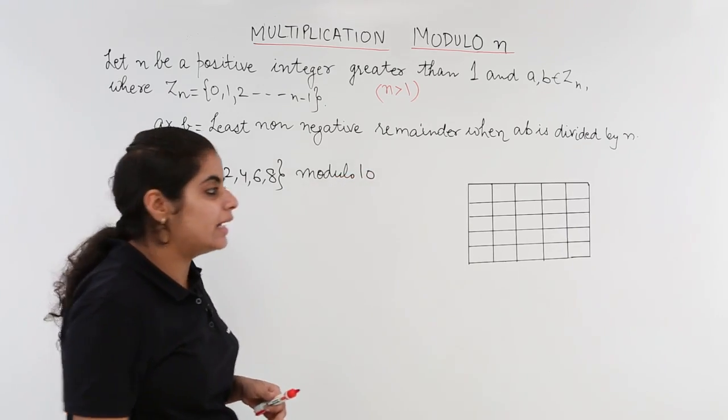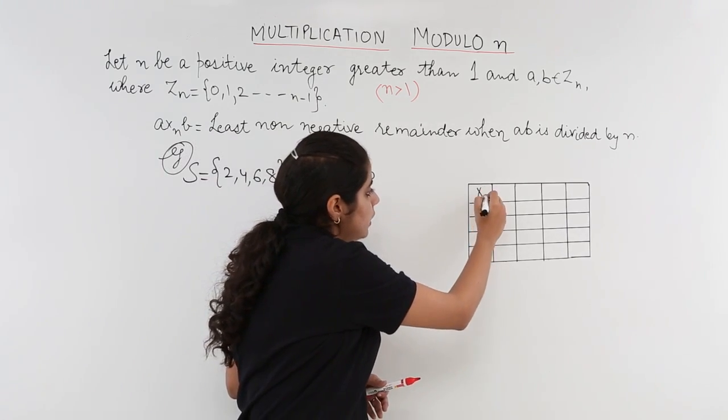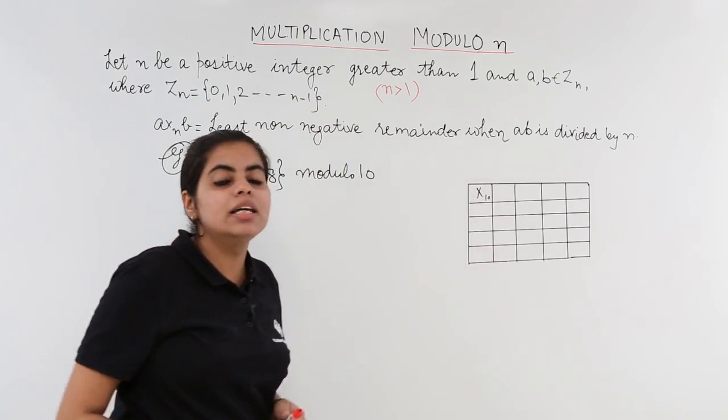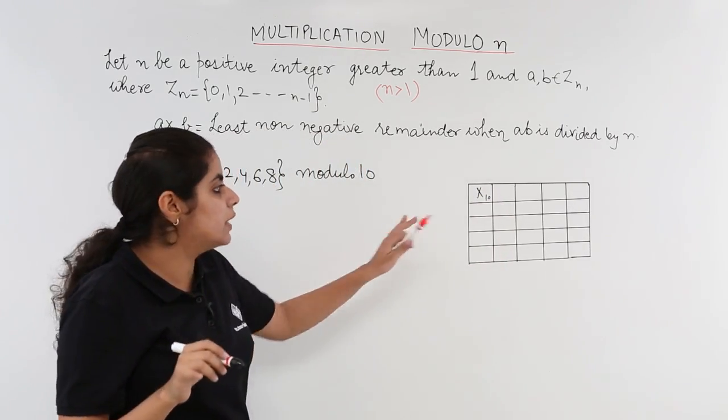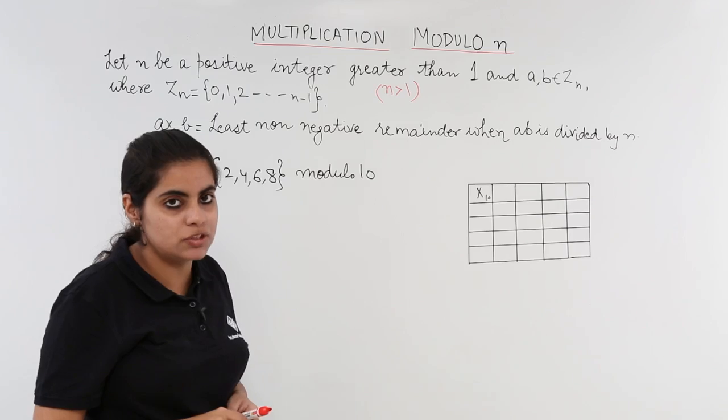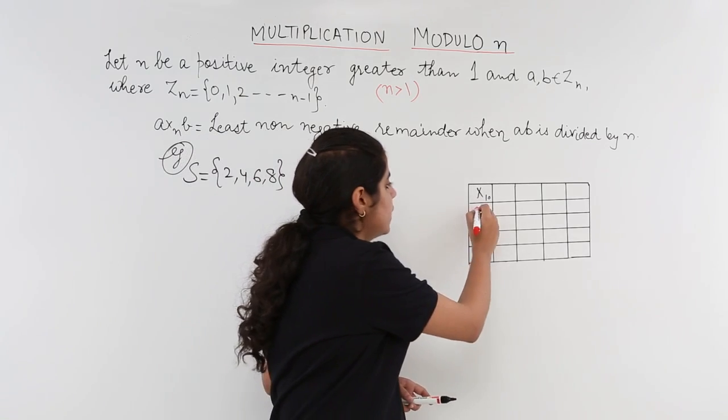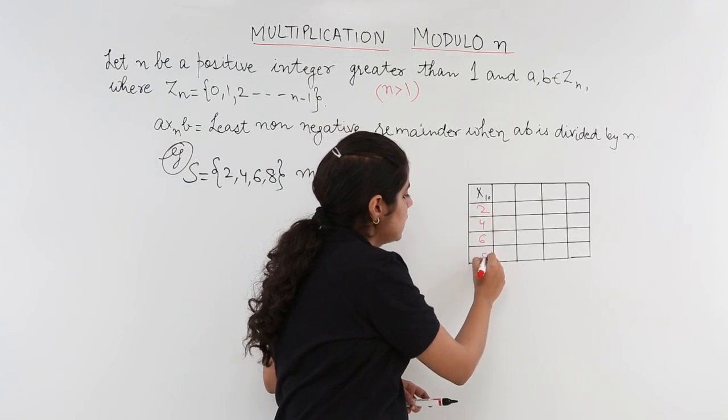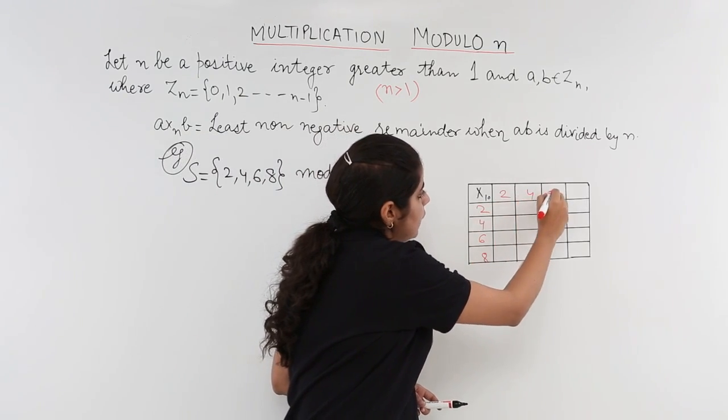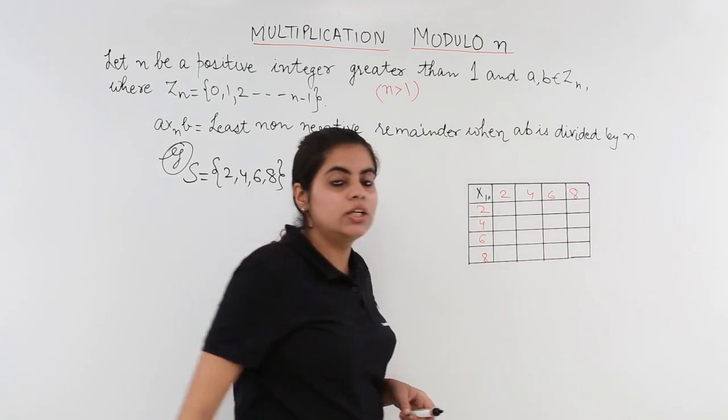Since we are supposed to find out modulo 10 by this example we will be computing modulo 10. So I would be writing here multiplication 10. In the earlier video we had a plus, now we have multiplication so I write multiplication sign. What are the elements of the set? They are 2, 4, 6, 8 so I write 2, 4, 6, 8 vertically also and horizontally also.